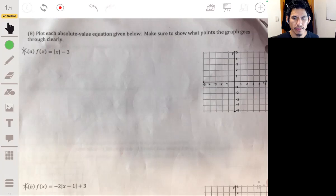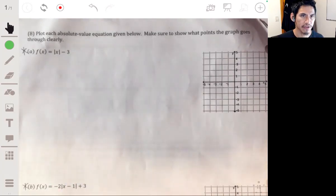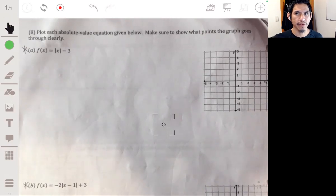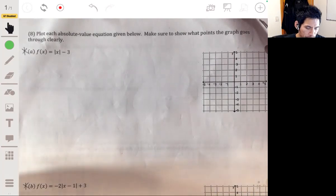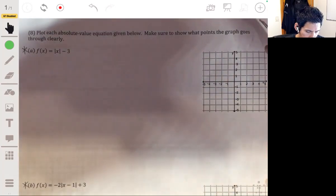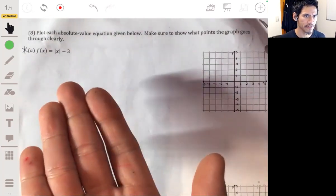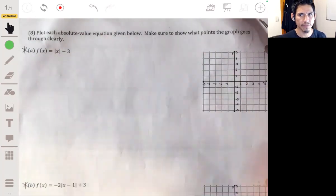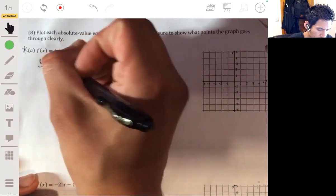Alright, so now I'm going to show you how we can graph absolute value equations. They're actually not as hard as you may think, as long as you understand the simple concepts. Just like any graph, you can always plug in numbers for x and then get numbers for y and plot the points. But obviously it may be tedious and take a long time, and although it is fun, we want to be efficient and smart about it.